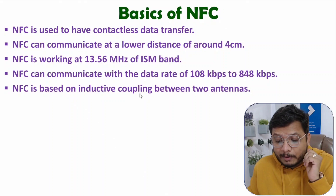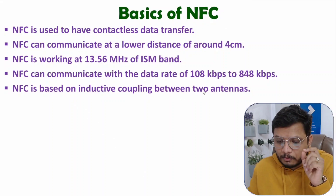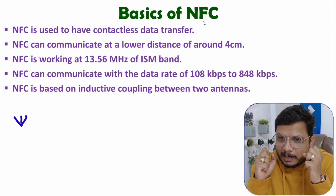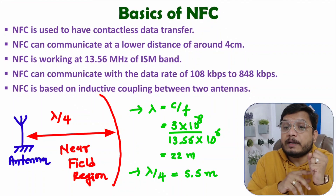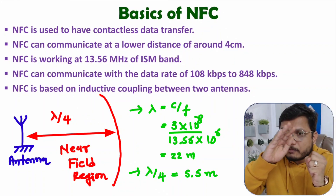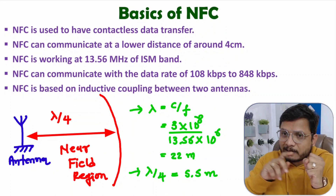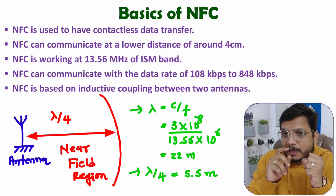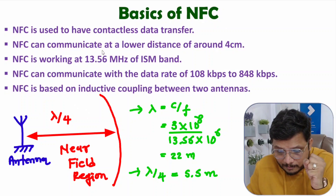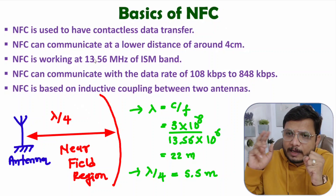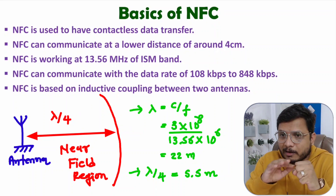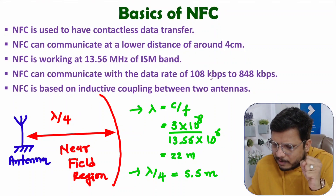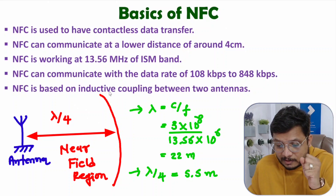NFC is based on inductive coupling between two antennas. In antenna radiation, different field patterns exist — nearer to the antenna the radiation field will be near field, and at larger distances it will be far field. The frequency of operation is very low, so at this frequency the far field pattern will be very weak. Communication happens with near field only, where in near field the data rate is also very low with this frequency, but inductive coupling is what enables near field communication between two antennas.